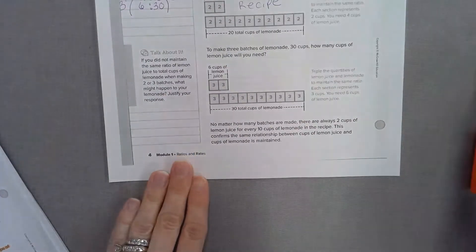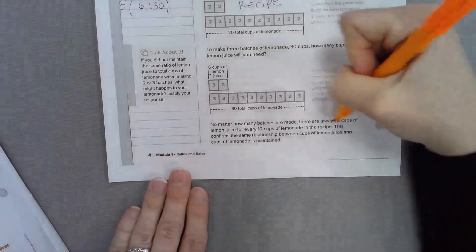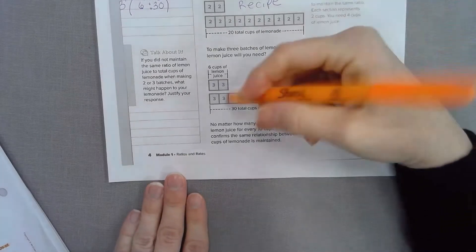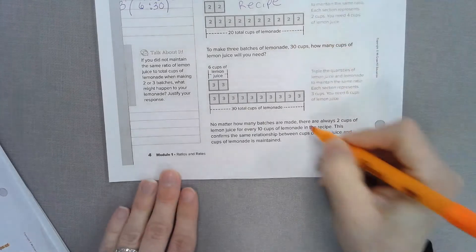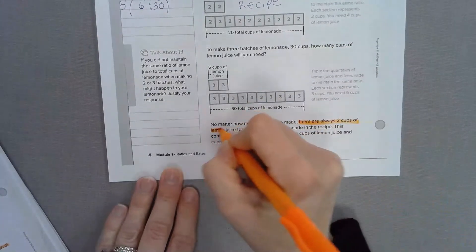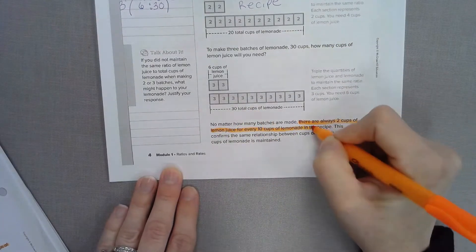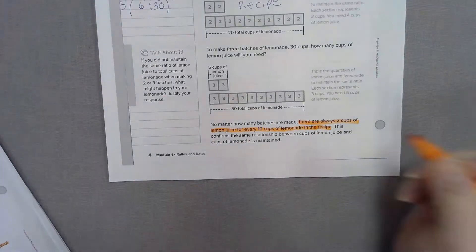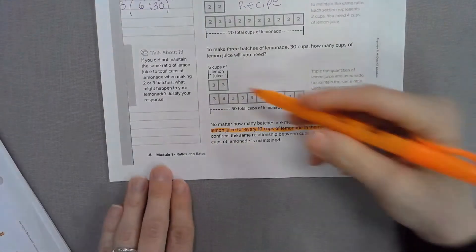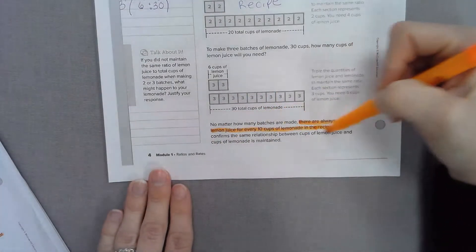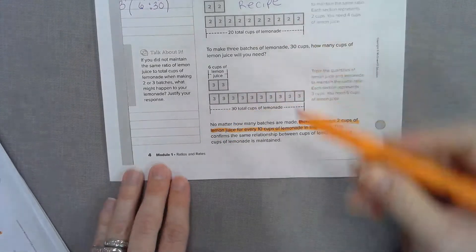No matter how many batches are made, there are always 2 cups of lemon juice for every 10 cups of lemonade in the recipe. So we're maintaining that ratio. This confirms the same relationship between the cups of lemon juice and the cups of lemonade are maintained.